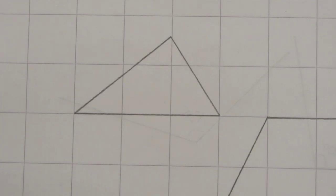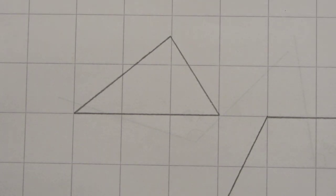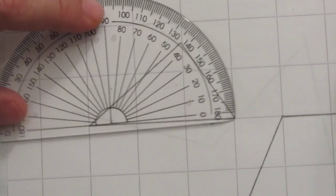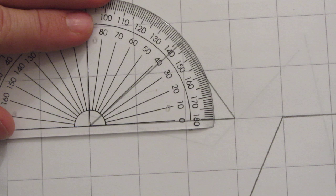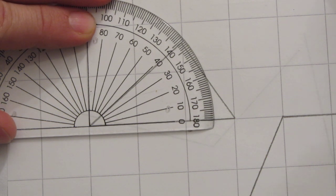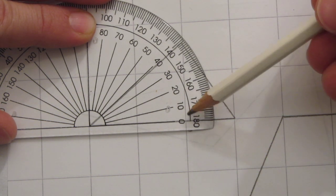Once you can measure angles, you can measure angles inside shapes. Here we have a triangle. Let's start with one of these angles down here. Get the protractor in the right place and start counting up from this zero here. We get to 39 degrees.